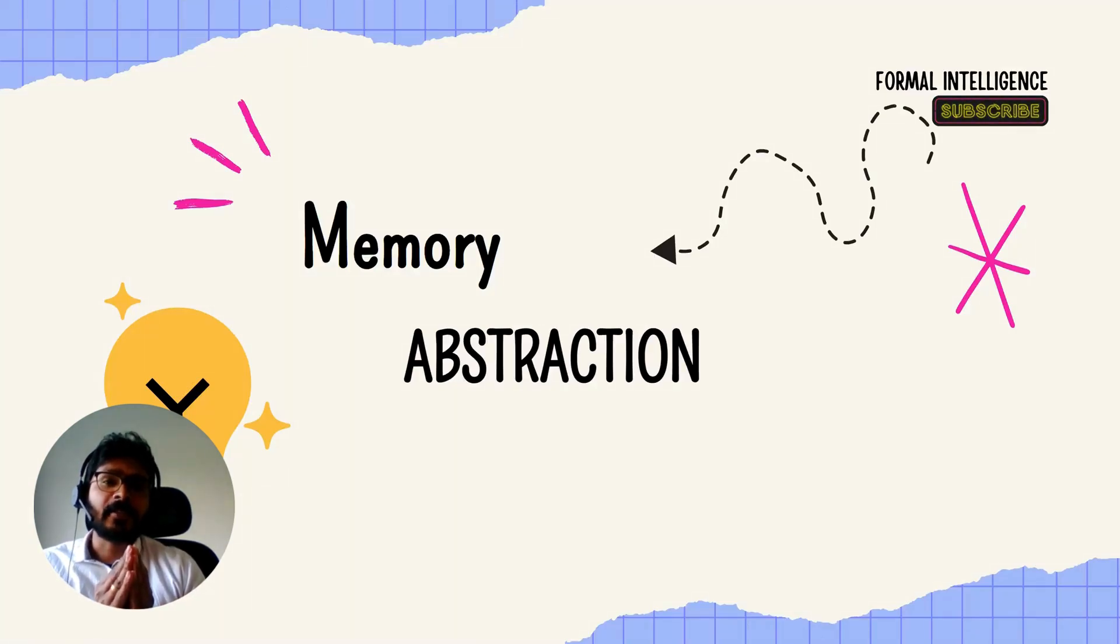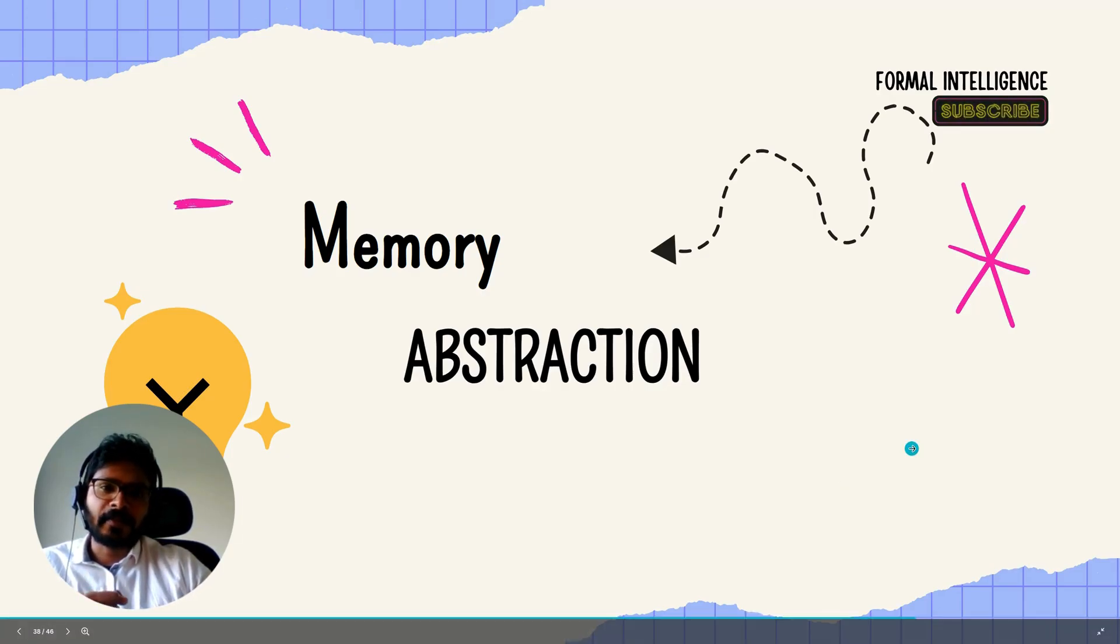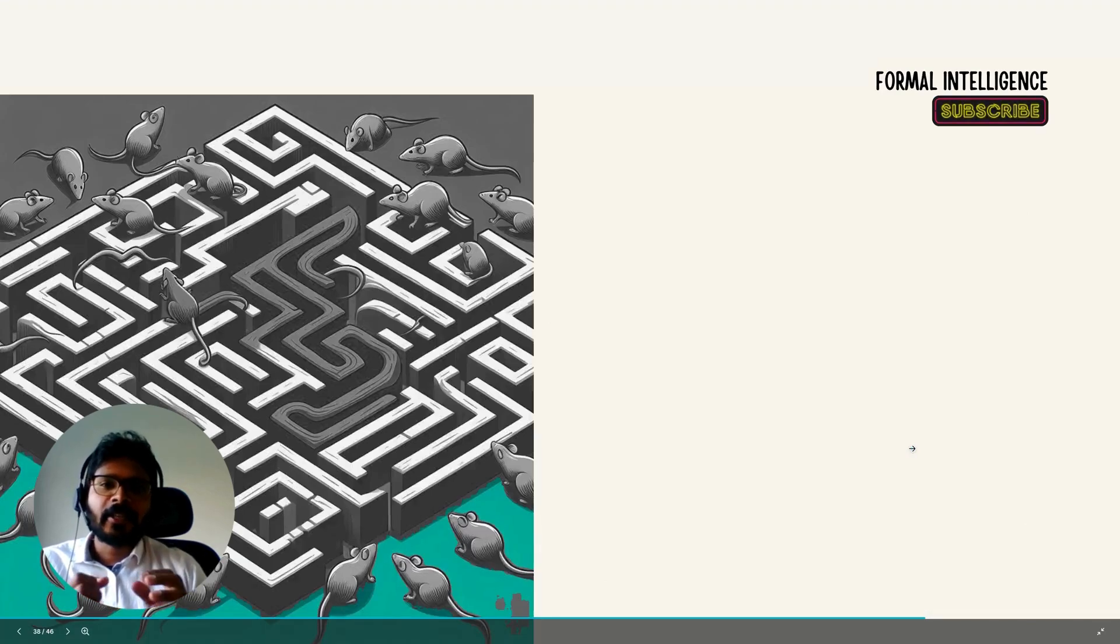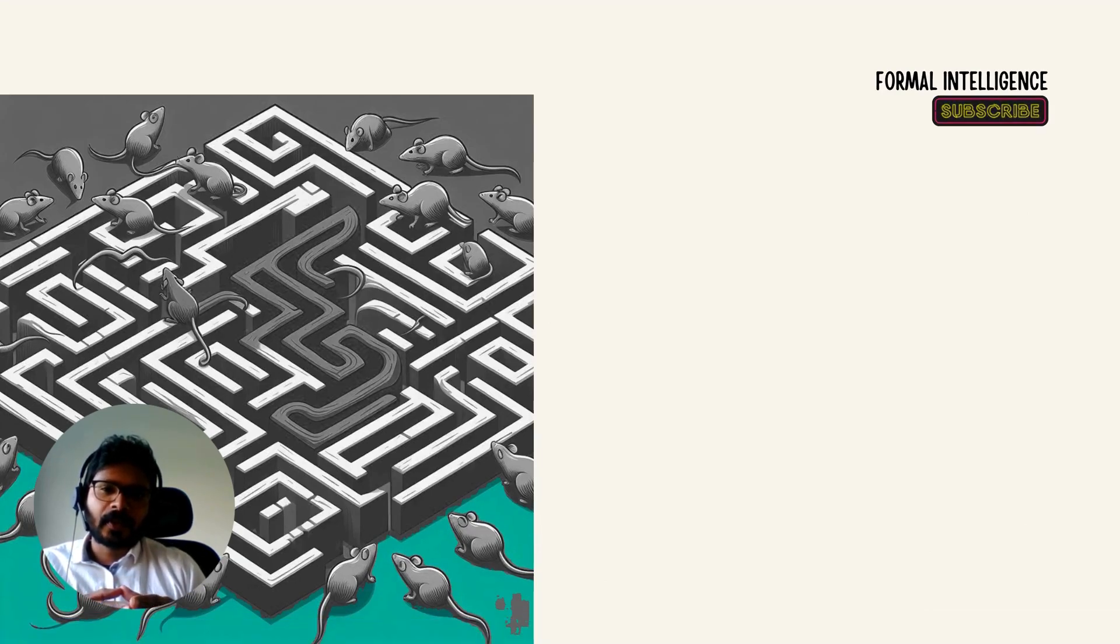In the intricate world of formal verification, abstractions are not just helpful, they are essential. They are the silent heroes that transform a complex design into something far more manageable. Imagine a maze with multiple entry points. You want to see if you constructed your maze correctly. You're letting 20 rats enter the maze from all possible ports.